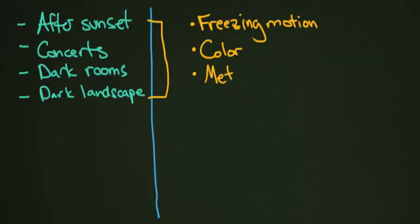Metering is going to be hard. You're going to have a little bit of difficulty figuring out what is 18% gray like in our metering lesson. And camera shake is going to be a huge problem because your shutter speeds are going to be low. What does that mean? What does a low shutter speed mean?